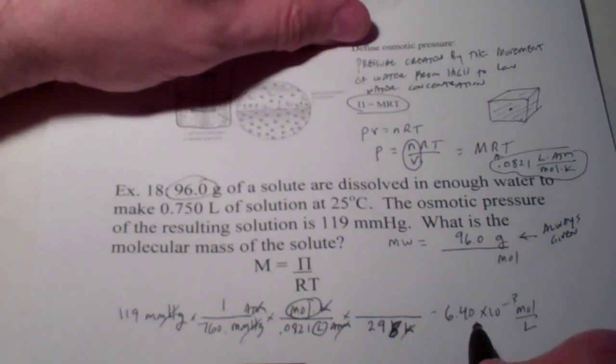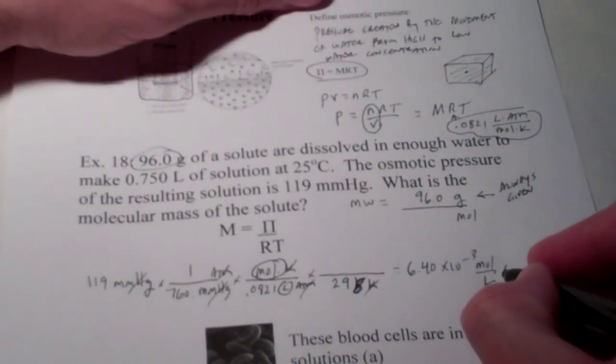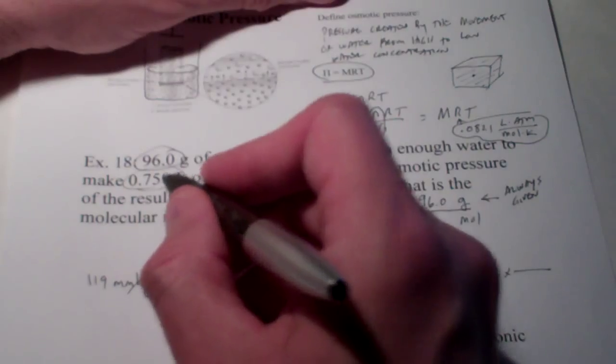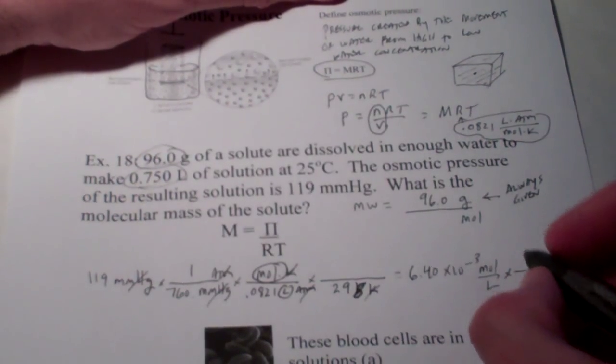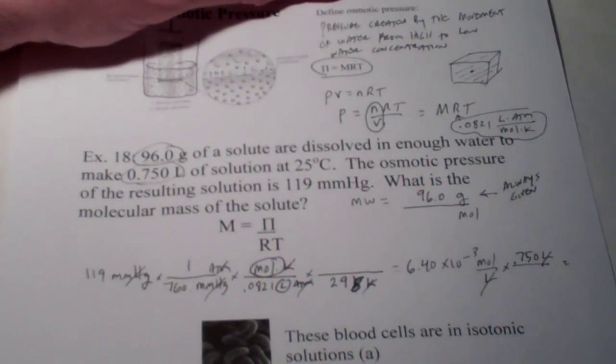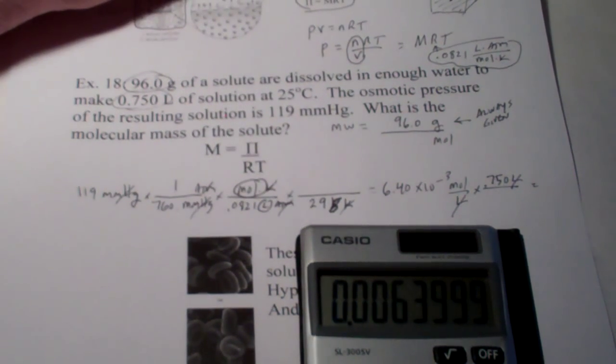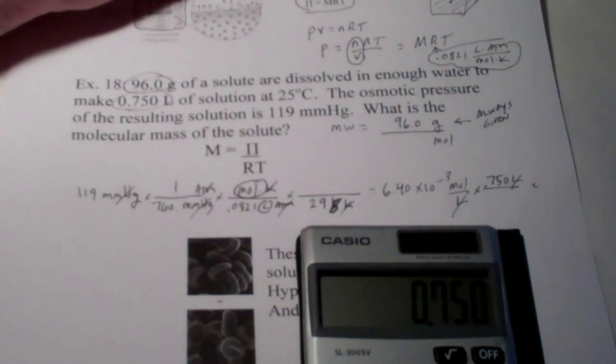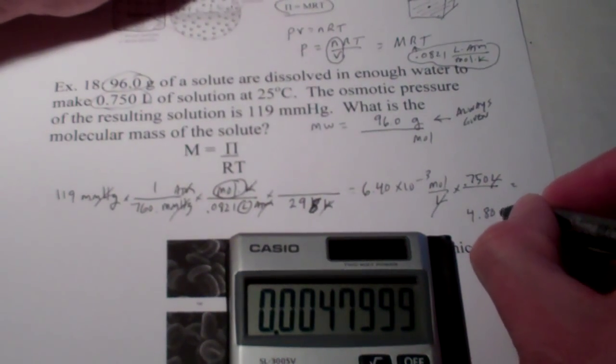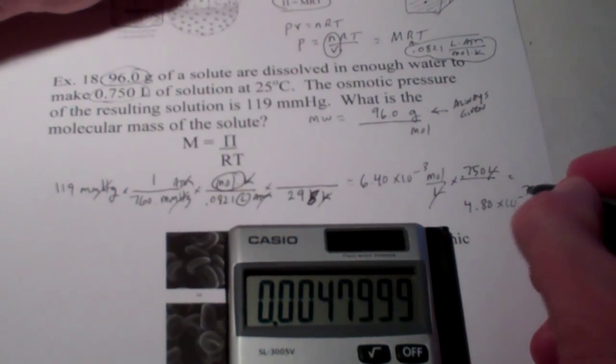This is not the number I put here. I want just moles. So, I need to get out of liters of solvent. Well, that's not a big deal. I have 0.75 liters of solution. So, I'll multiply by 0.75 liters of solution. And, we will have moles. So, let's see what that turns out to be. So, I'll multiply the previous answer by 0.750. And, we end up with 4.80 times 10 to the negative 3 moles.